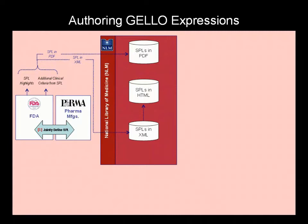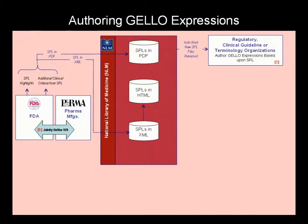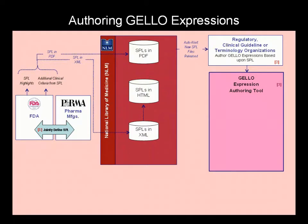One possible scenario for creating Jello expressions would be to use the SPL as a source for clinical criteria. Note that an analogous process would be conducted for criteria coming from other sources, such as clinical trials, expert panels, and other sources of clinical evidence. A regulatory, clinical guideline, or terminology organization uses the open-source Jello expression authoring tool to encode SPL XML files coming from the FDA.